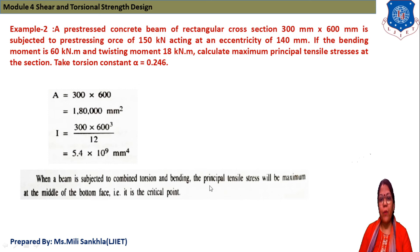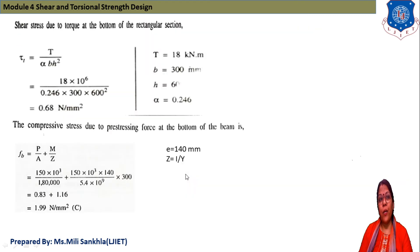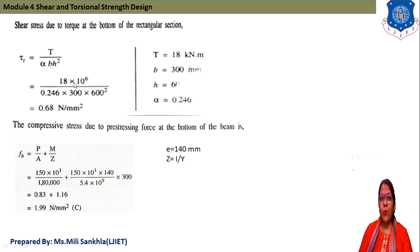When the beam is subjected to combined torsion and bending, the principal tensile stress is maximum at the middle of the bottom face, which is the critical point. Shear stress due to torque at the bottom of the rectangular section: τ = T / (α D H²) = 18 × 10⁶ / (0.246 × 300 × 600²) = 0.68 N/mm².